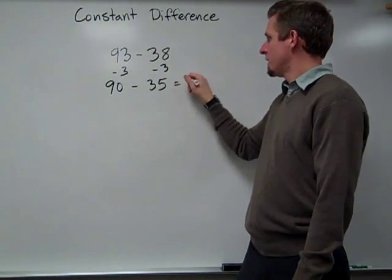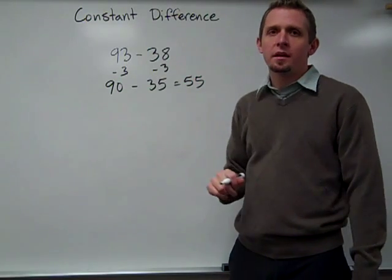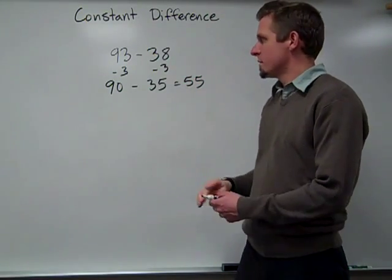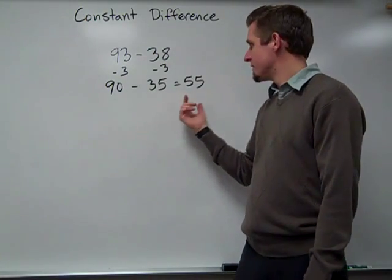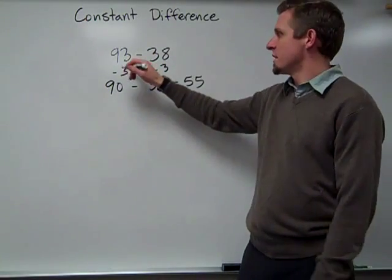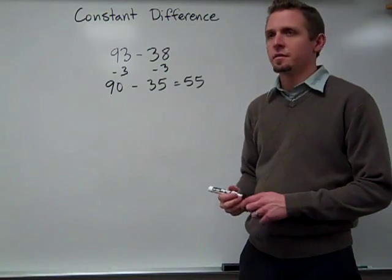90 minus 35, that's a little bit easier for me to do in my head, is 55. So the distance between 90 and 35 is 55, which would also be the same distance between 93 and 38, which is also 55.